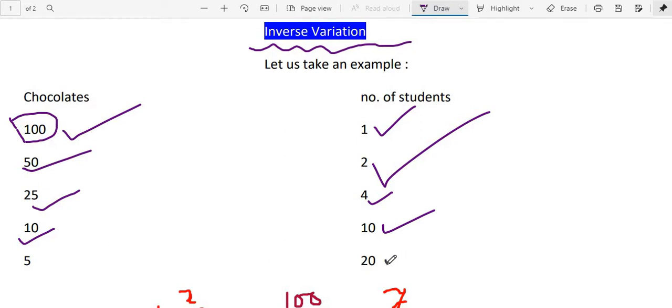And say there are 20 students. I want to distribute among 20 students. Then each student will get 5. Now why this is called inverse variation? One variable should increase, then other variable should decrease. Not like direct variation. Both numbers are either increasing or decreasing. But here one number will be increasing, then another number will be decreasing.